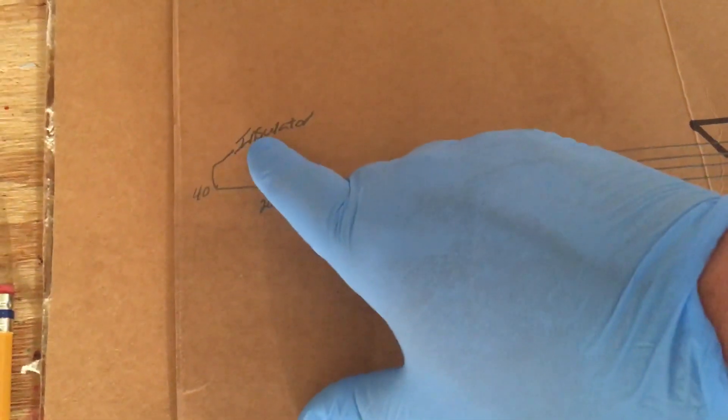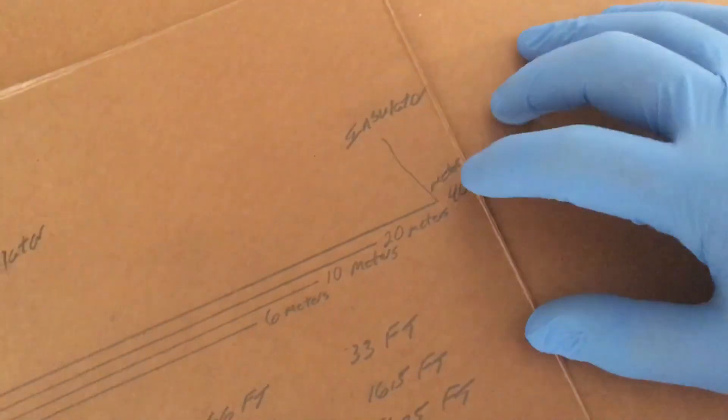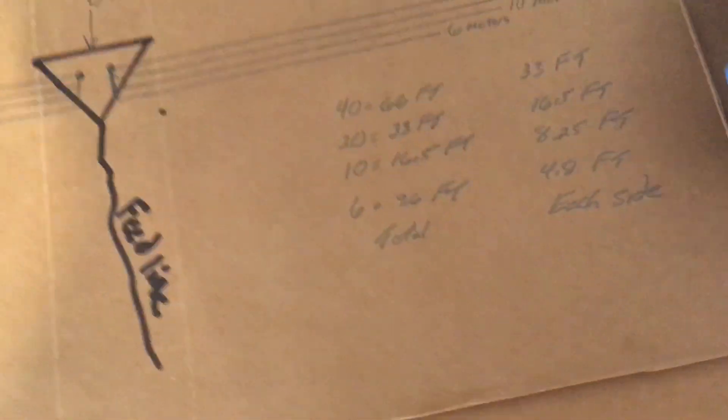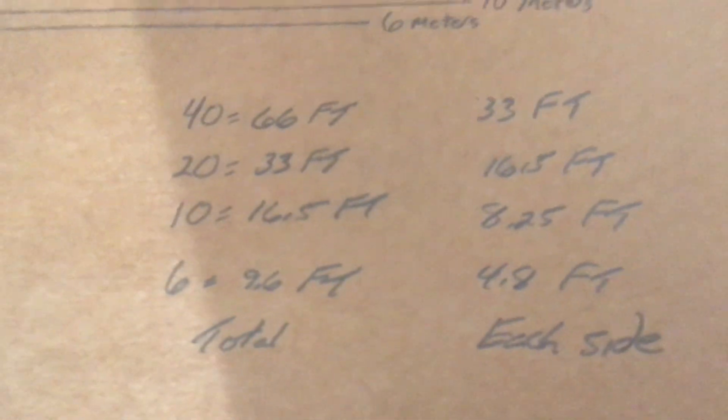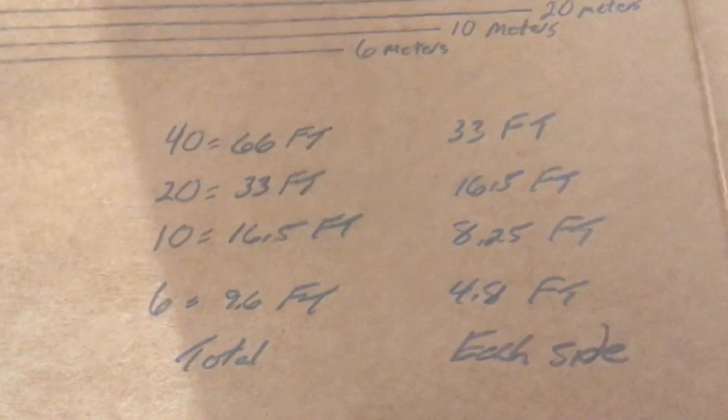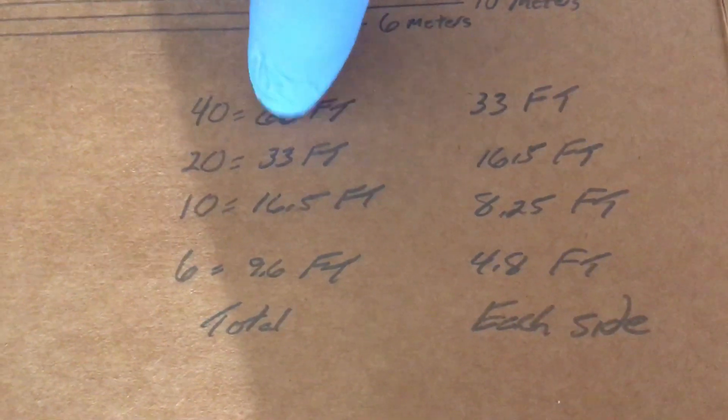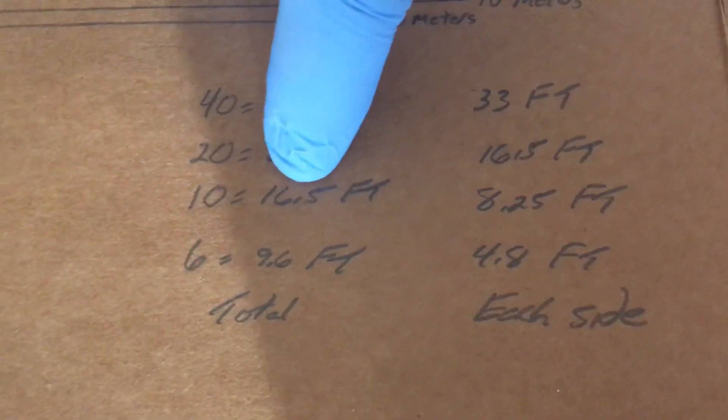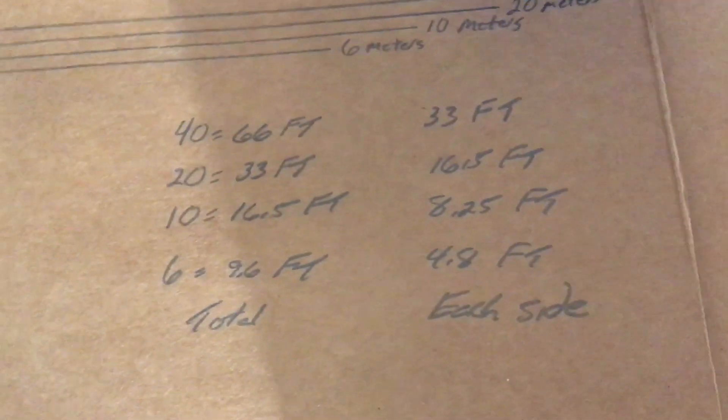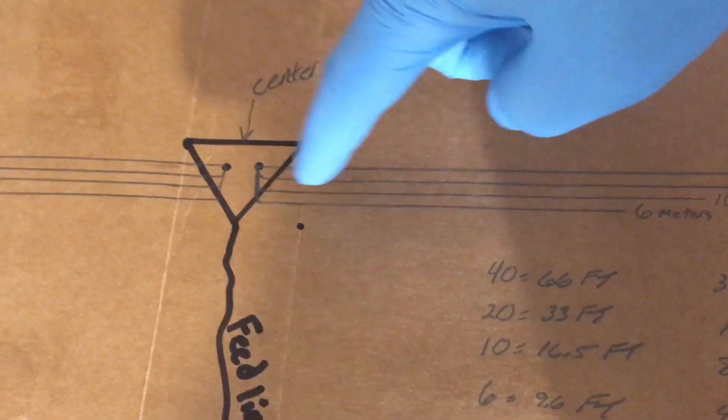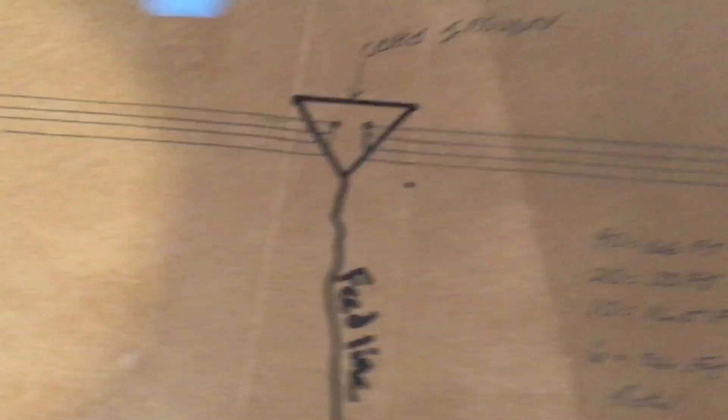On the 40, we'll put the insulator on both ends here. Then for the length, as you can see here, the overall length is 66 feet, 33, 16 and a half, and 9.6. And for each side of the insulator...